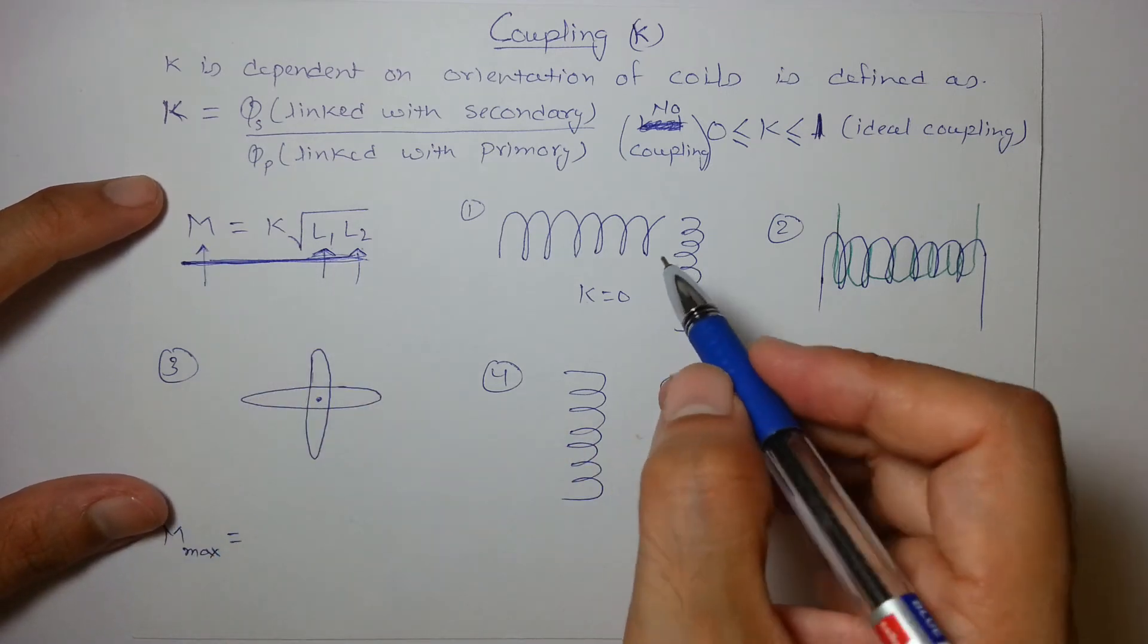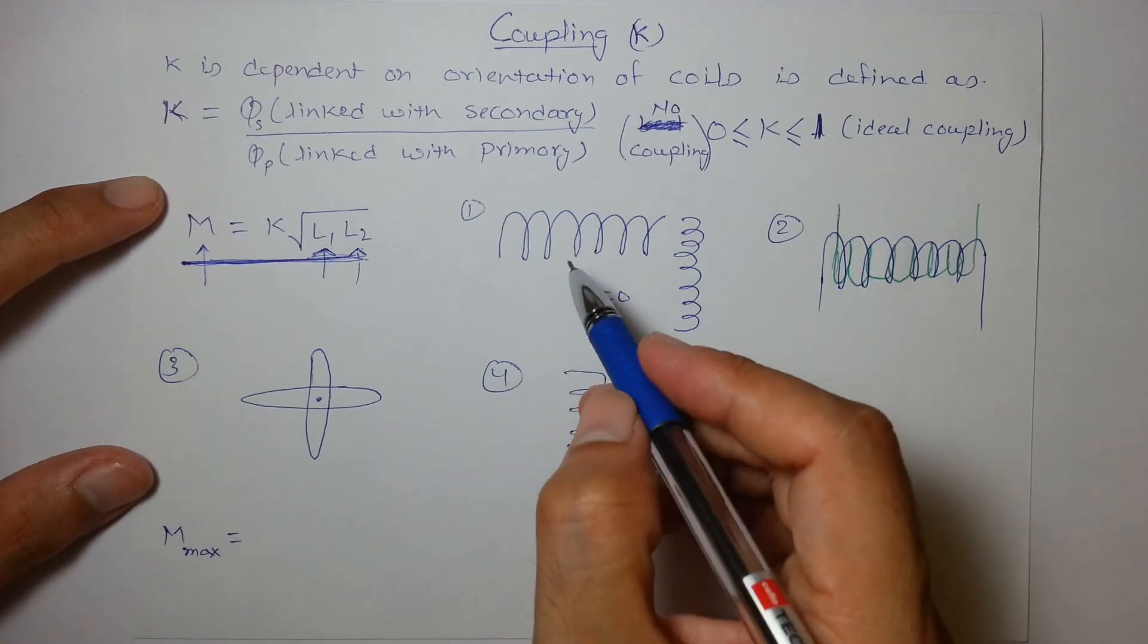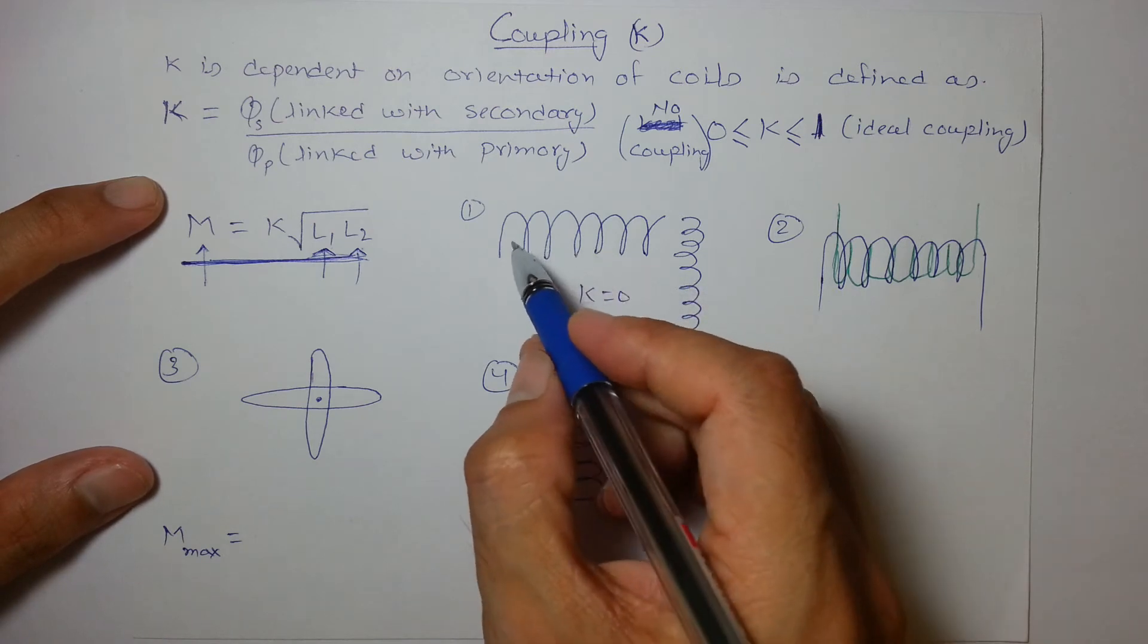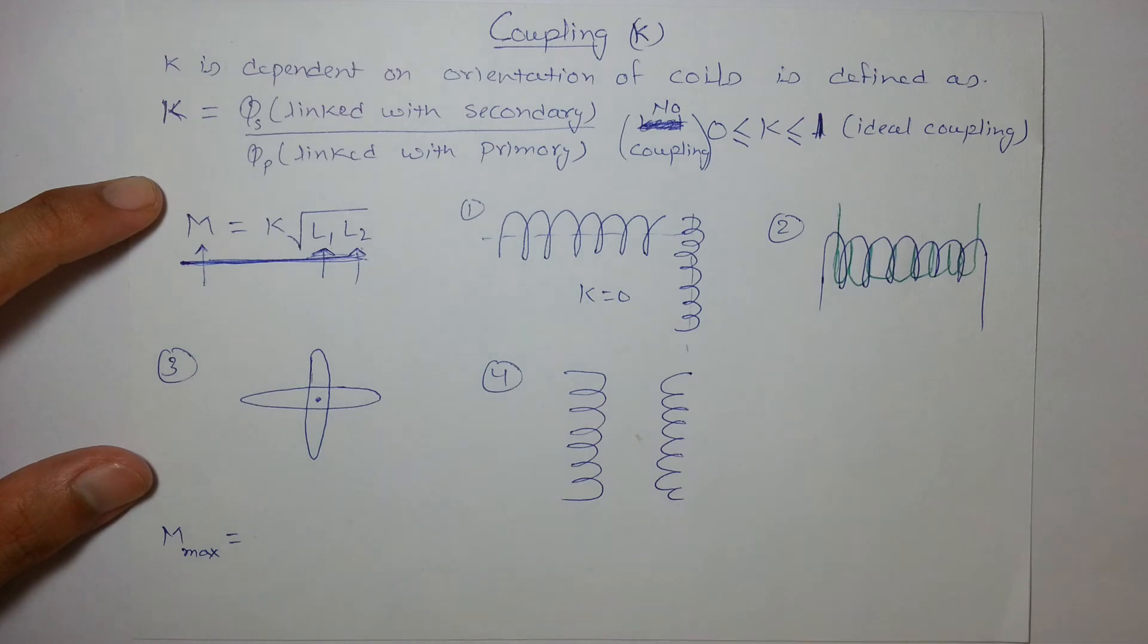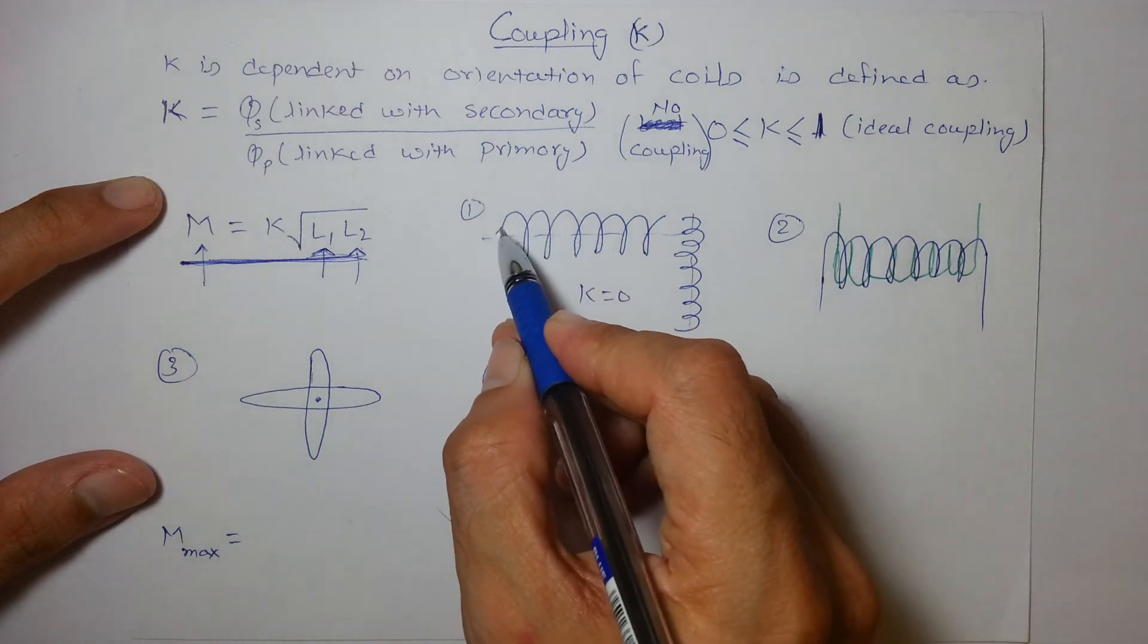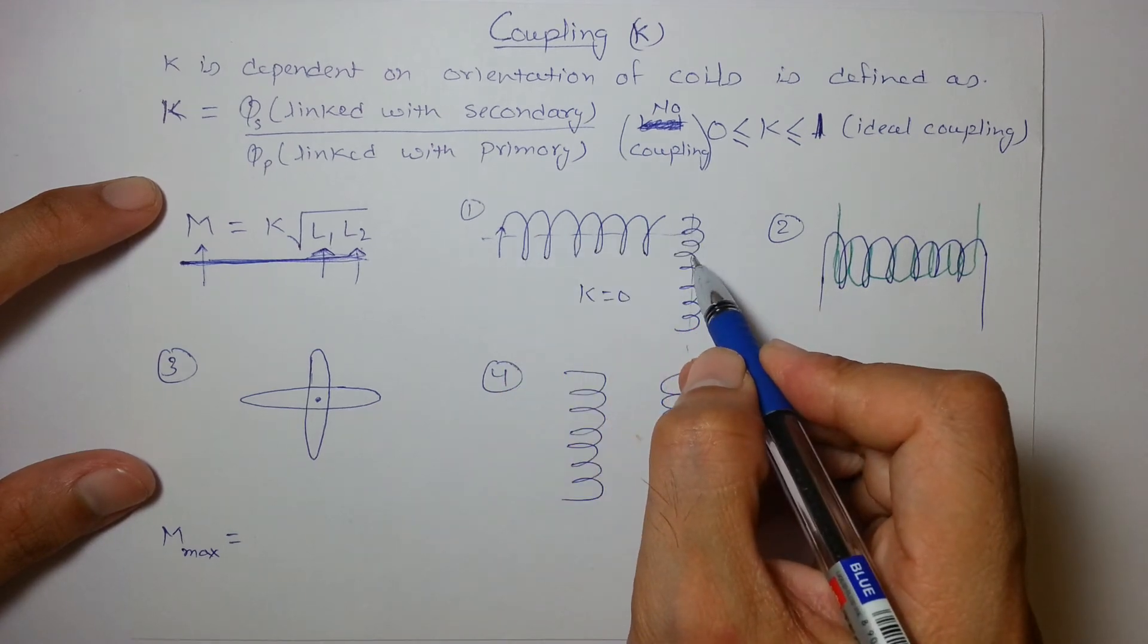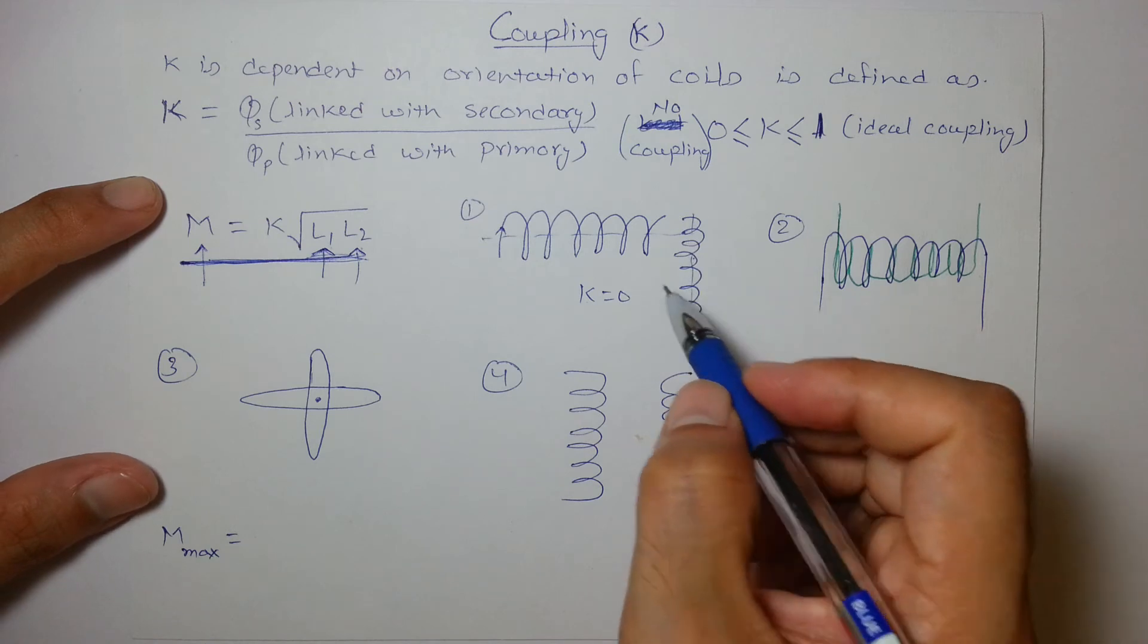So if we have to find coupling in the following cases: this is one solenoid, this is another, they are placed such that their axes are perpendicular. What will happen if current is passed in this? Then there will be no flux through the other solenoid, so there is no flux linkage hence the coupling coefficient will be 0.